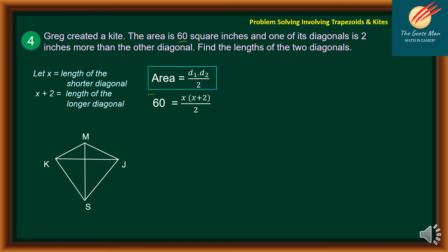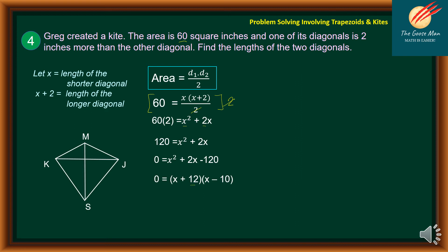Multiplying both sides of the equation by 2 and distributing, 60 times 2 gives us X times X equal to X squared, and X times 2 equal to 2X. So 120 is equal to X squared plus 2X. Subtracting 120 from both sides, 0 is equal to X squared plus 2X minus 120. Factoring the quadratic trinomial, we look for factors of 120 such that the middle term equals positive 2. The factors are positive 12 and negative 10. So we have 0 is equal to X plus 12 times X minus 10.